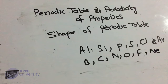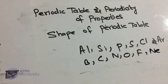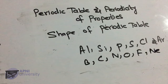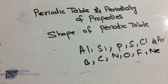In this way, elements having similar valence shell configuration come in the same group. Aise elements jinki valence shell configuration similar hai, woh same group mein present honge. The arrangement of elements into periods ensures that elements with similar properties end up in the same group in the periodic table. Isi tarah periodic table mein similar properties wale elements ek hi group mein arrange hote hain.